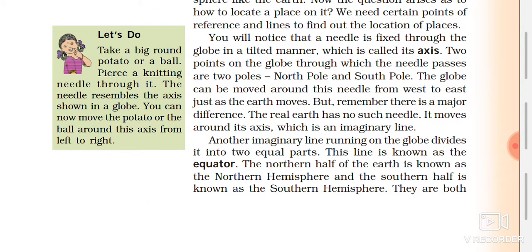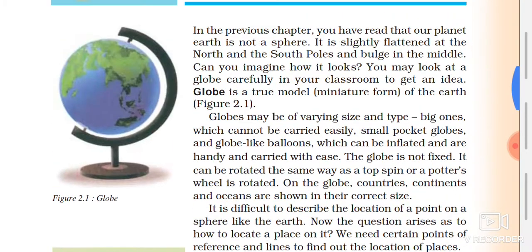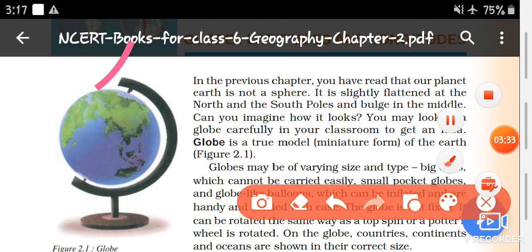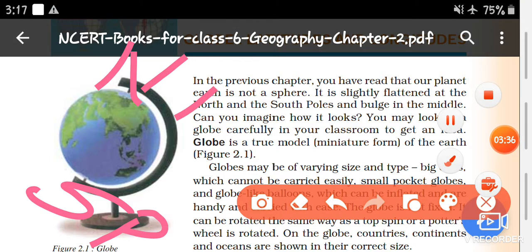These are called the axis. The two points of the globe through which the needle passes are the north pole and the south pole — this is the north pole and this is the south pole.